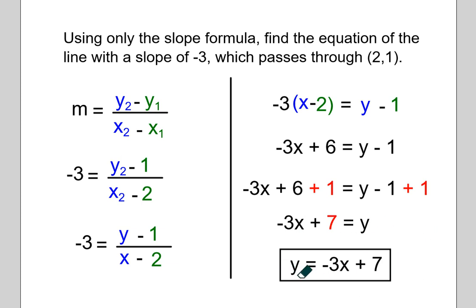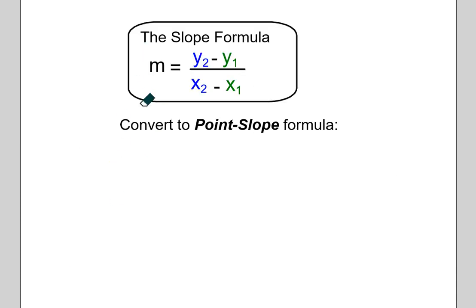Then I distribute: negative 3 times X, and negative 3 times negative 2 gives positive 6. Then I solve for Y by adding 1 to both sides. I come up with the equation Y equals negative 3X plus 7. So now the equation of the line is given in slope-intercept form: negative 3 is the slope and 7 is the Y intercept, meaning this line will go through the Y axis at 0 comma 7.